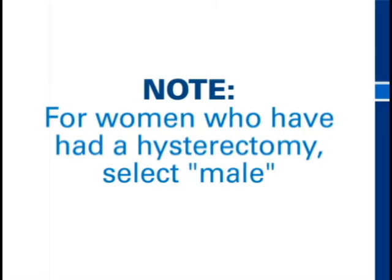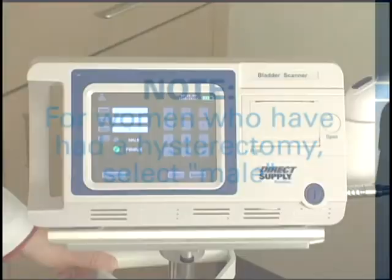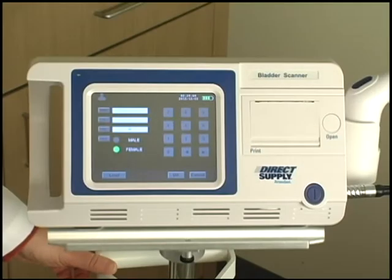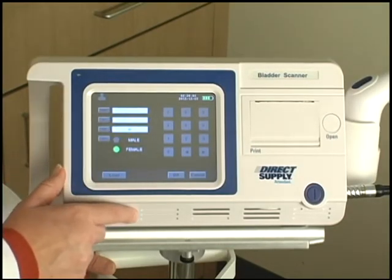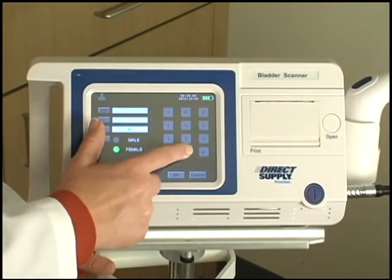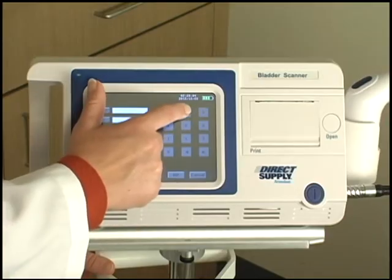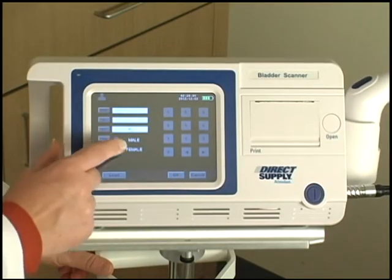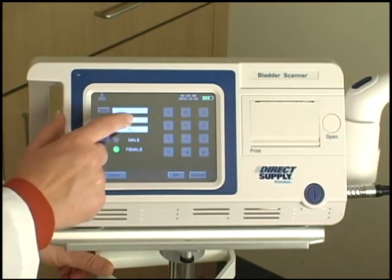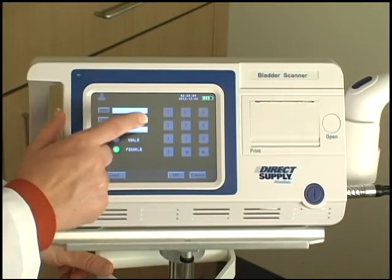Select male for a female resident who has had a hysterectomy. For the record number and age, you can use the arrow keys to move the cursor to the left and right, and use the numeric keypad on the right side of the screen to enter the correct value.